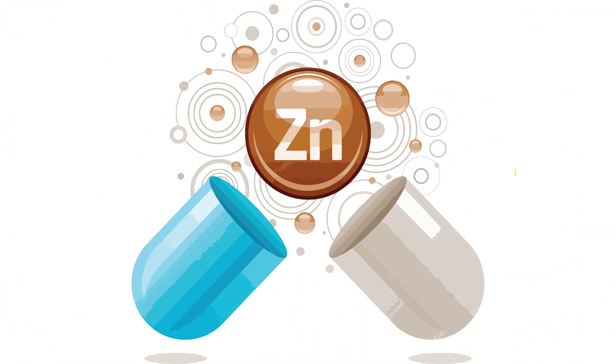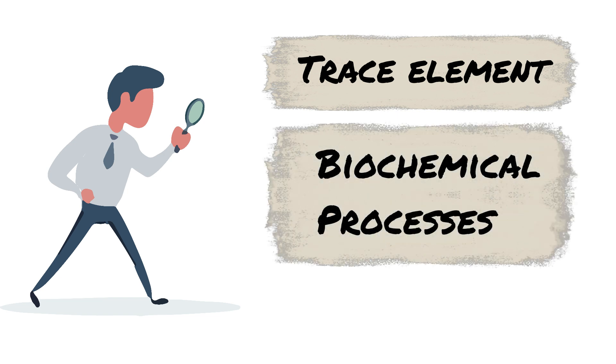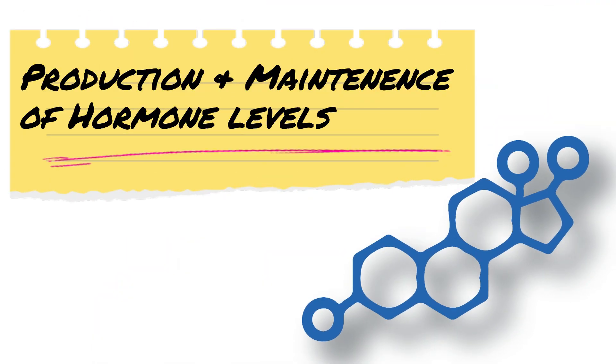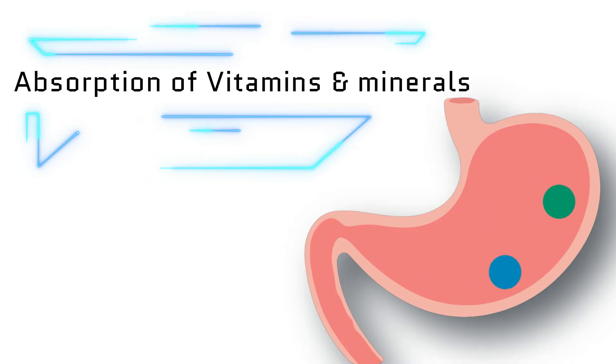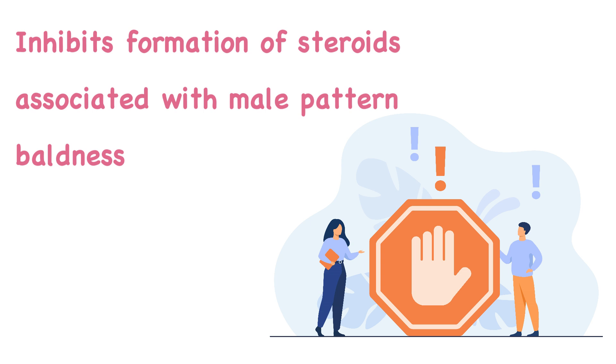The next nutrient is zinc. Zinc is a trace element, yet it is essential for a lot of biochemical processes including cell reproduction, production and maintenance of hormone levels, protein synthesis, and absorption of vitamins and other minerals. Zinc inhibits the formation of steroids associated with male pattern baldness.